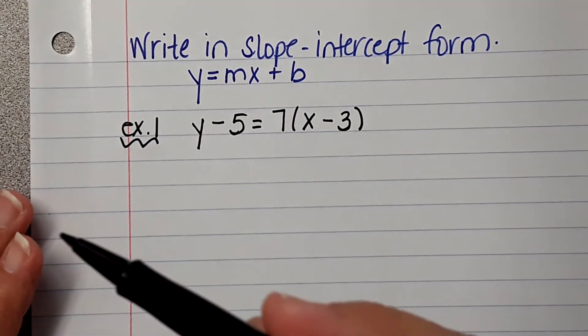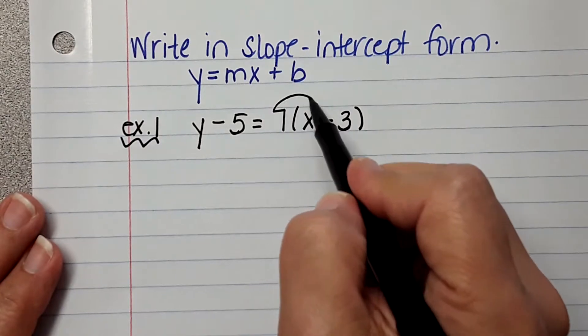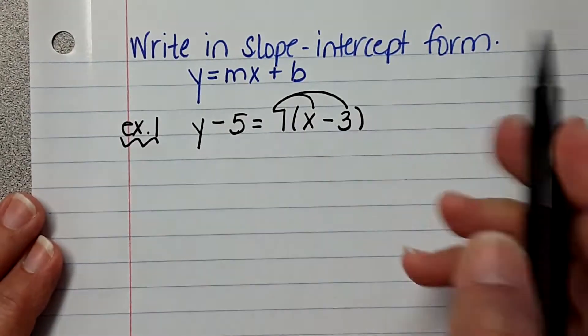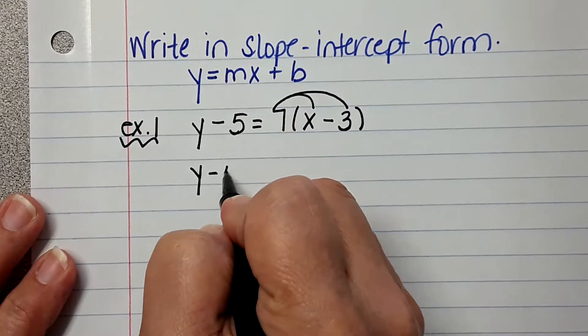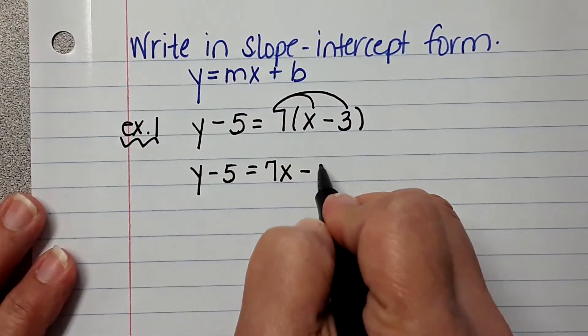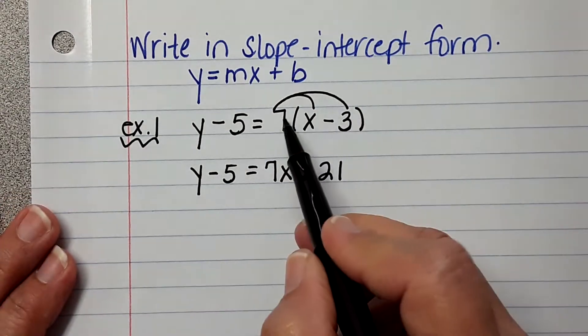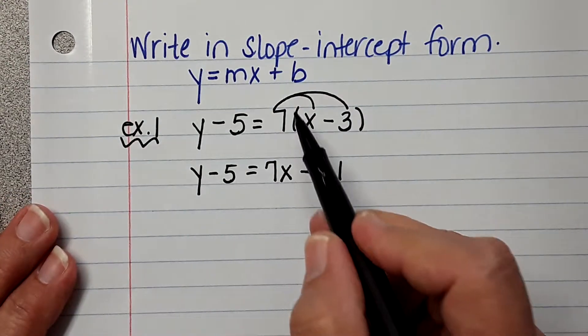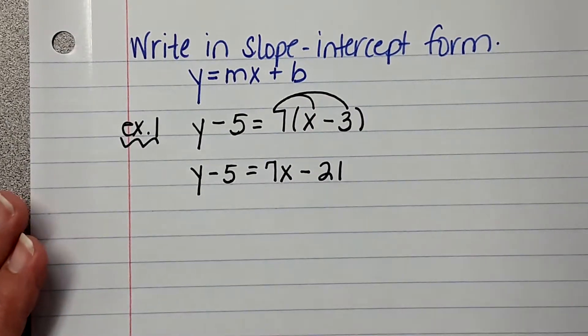All right, so the first thing we need to do is we need to distribute the 7, okay? So 7 times X was 7X, 7 times negative 3 was minus 21.